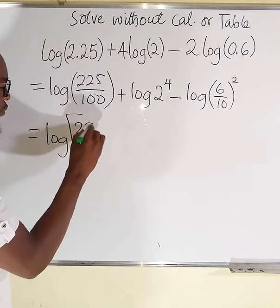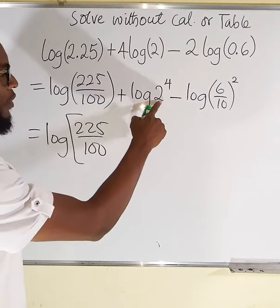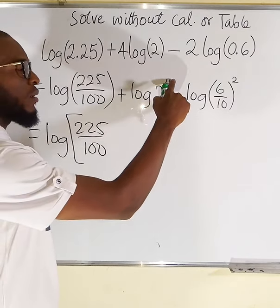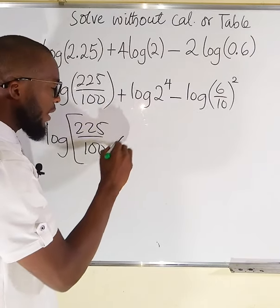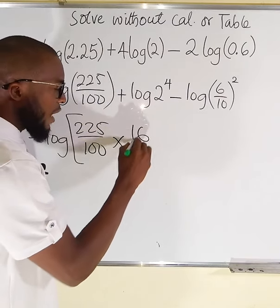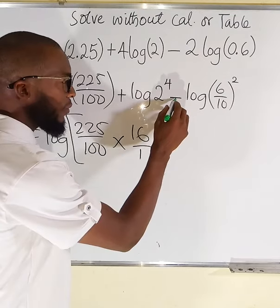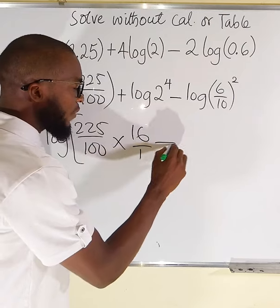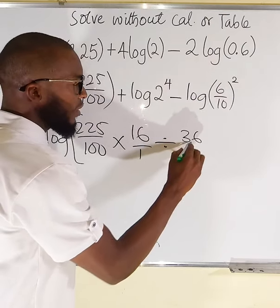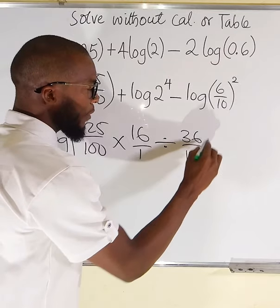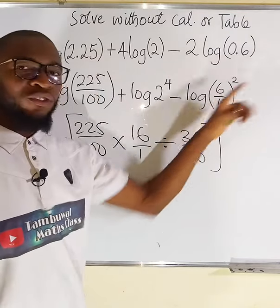What we have here is 225 divided by 100. Remember that 2 power 4 is 16. So instead of addition we multiply by 16, and I can rationalize it as 16 divided by 1. Then instead of subtraction we have division sign. Then this is 36 divided by 100, because 6 power 2 is 36 and 10 power 2 is 100.